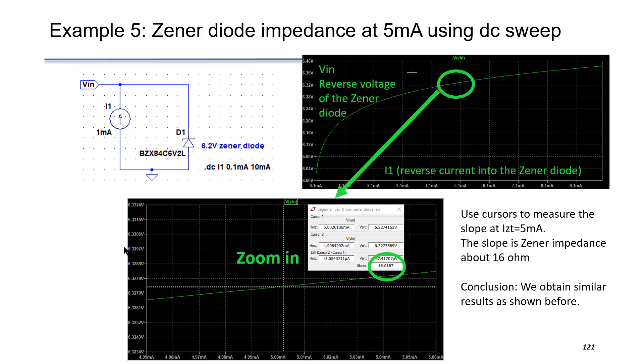Similarly, we can verify the Zener impedance by using the DC sweep over the current source I1. We sweep it from 0.1 mA to 10 mA.